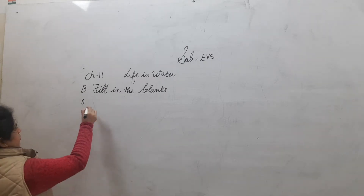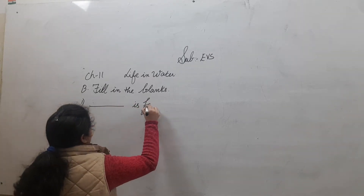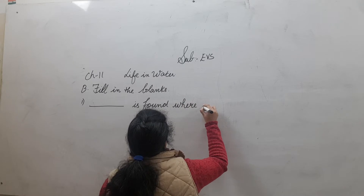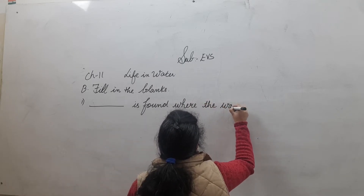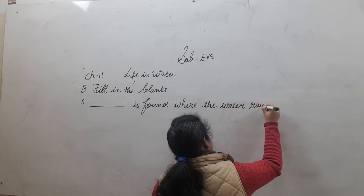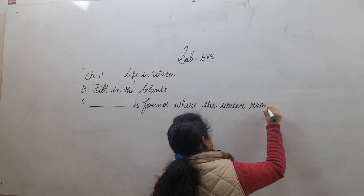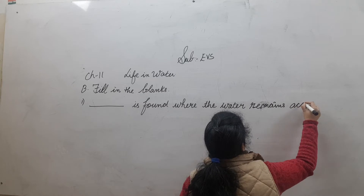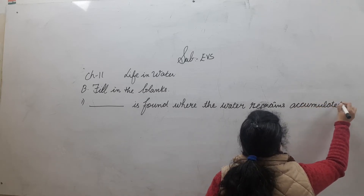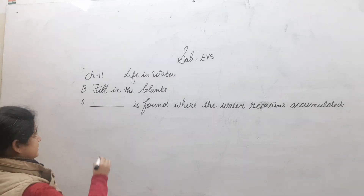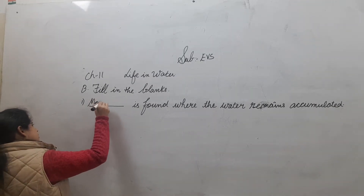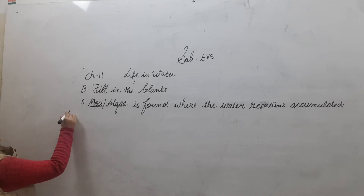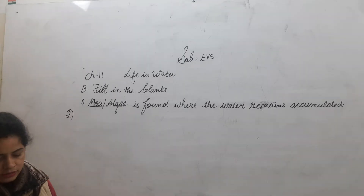First one: dash is found where the water remains accumulated. The answer is moss or algae. Both are correct for this one.